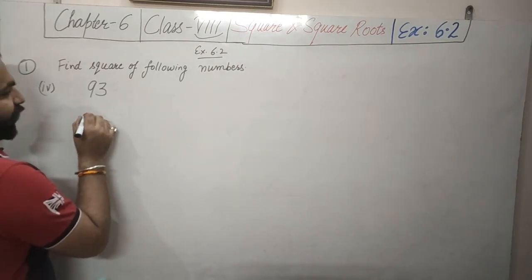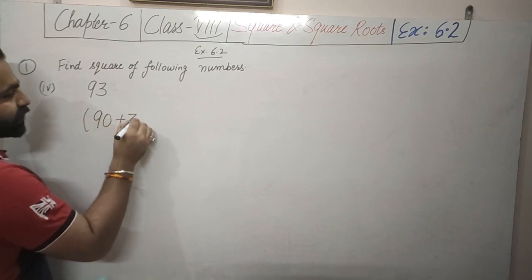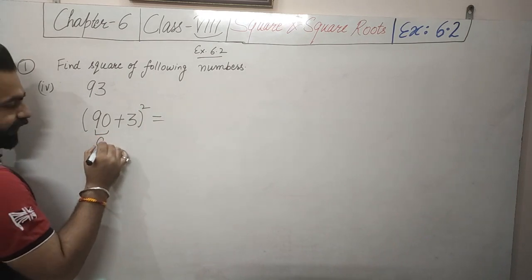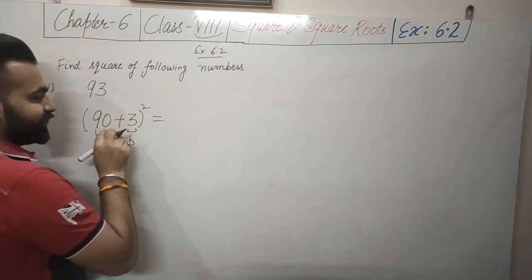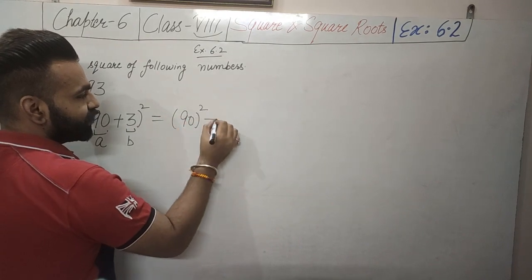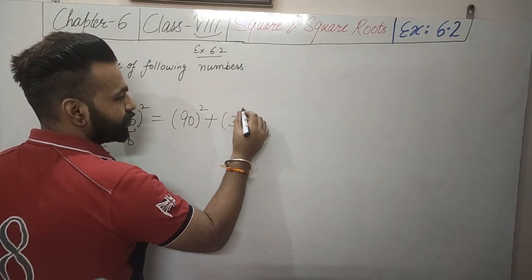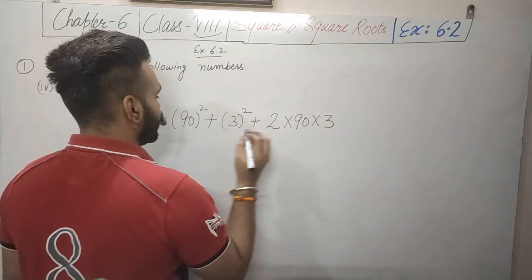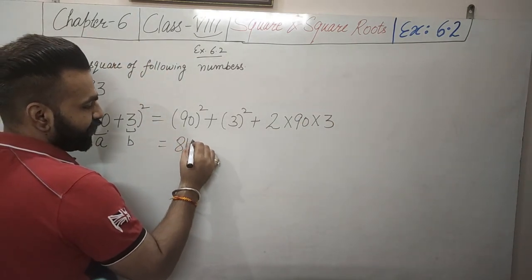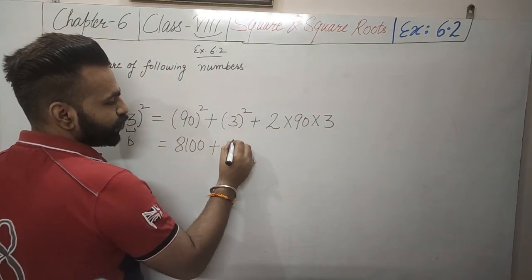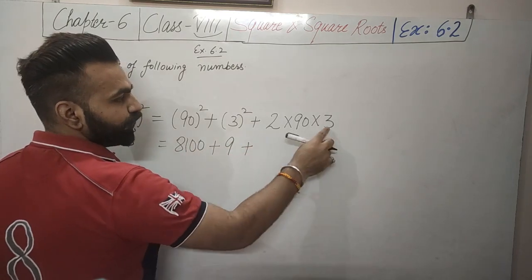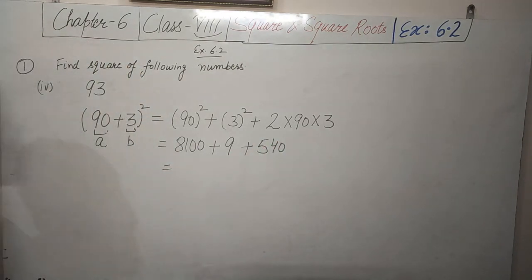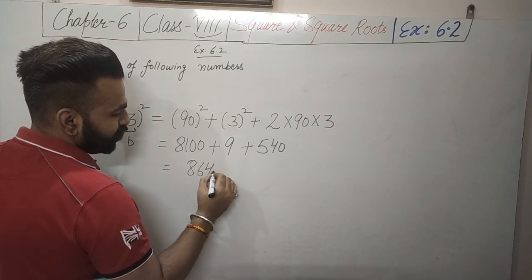Next: 93 squared. We write 93 as 90 plus 3, so a is 90 and b is 3. This equals 90 squared plus 3 squared plus 2 into 90 into 3. Now 90 squared is 8100, 3 squared is 9, and 2 into 3 is 6, 6 into 90 is 54, so that gives 540. Adding 8100 plus 9 plus 540 gives 8649.